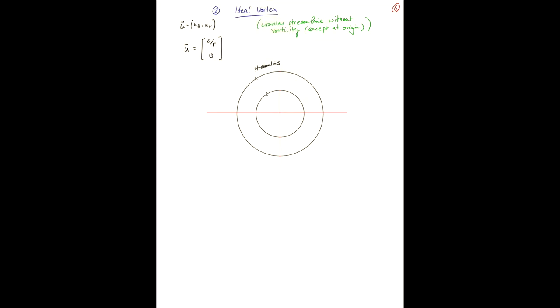So if we sketch this, it becomes infinite at the origin and then inversely proportional. So as you go out, it becomes very small. As r goes large, your velocity becomes very small.